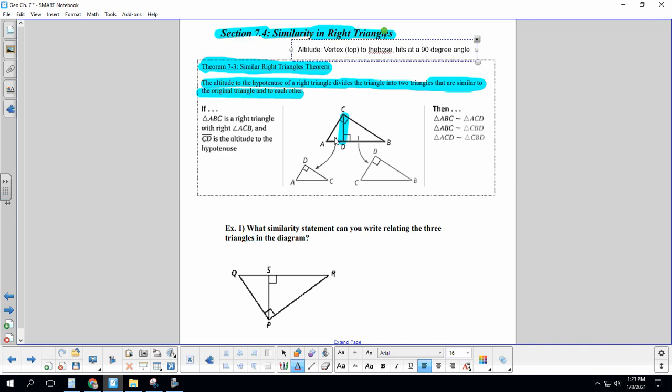So when you throw down an altitude, it starts at the top and ends in 90 degrees. And then what happens when you take a triangle and you cut it like that, you create not only this big triangle here, but you create this little triangle here, and this little triangle here, and what happens is that all three triangles are similar to each other.